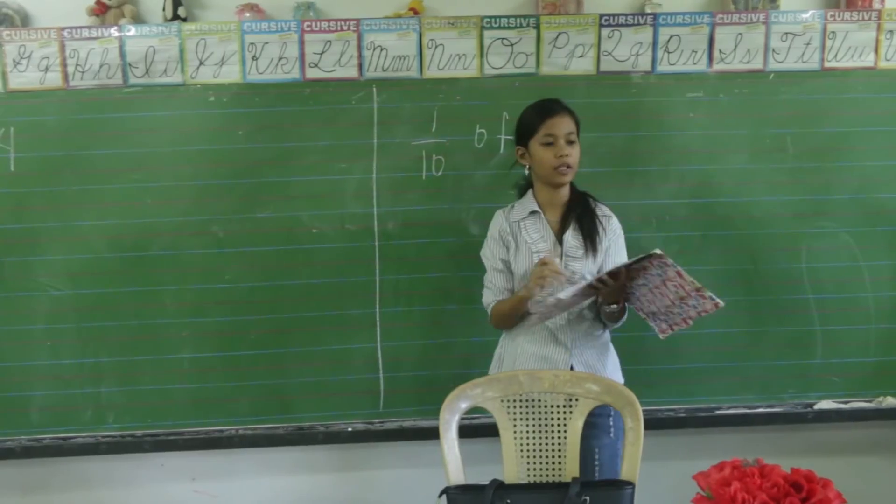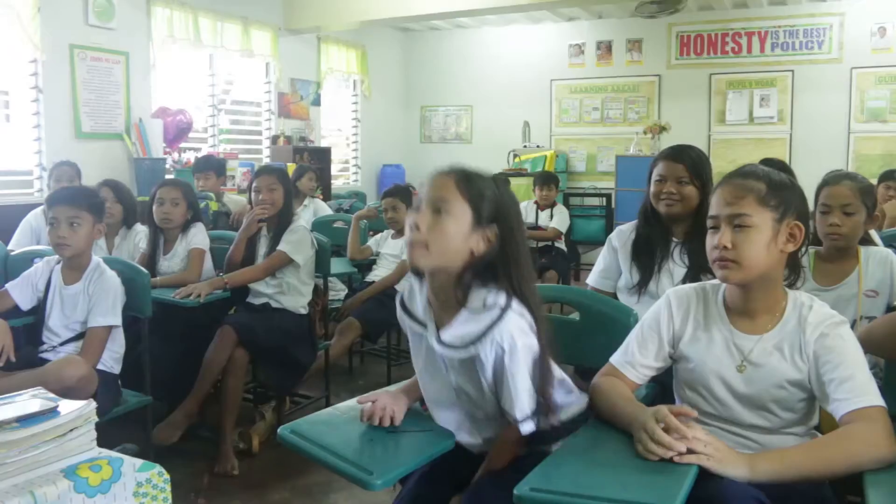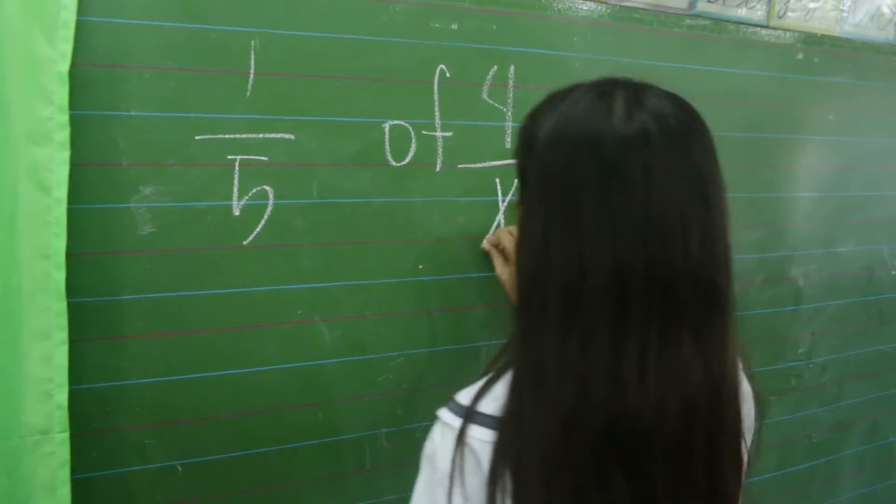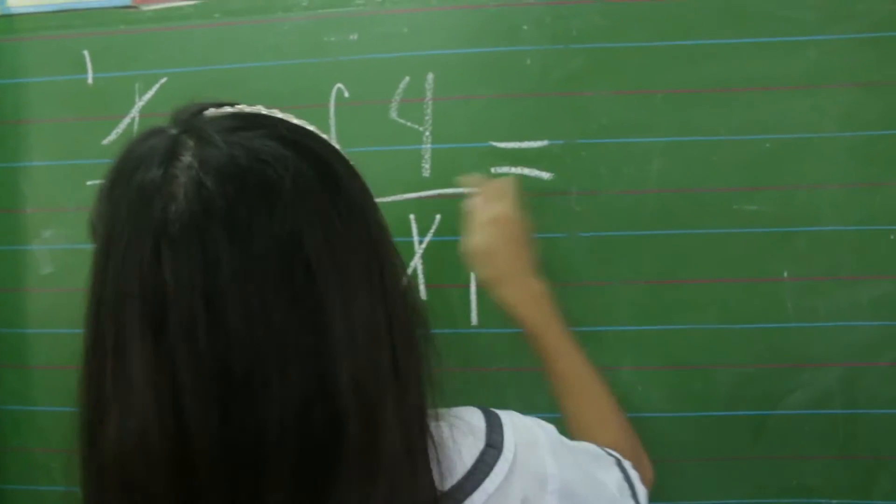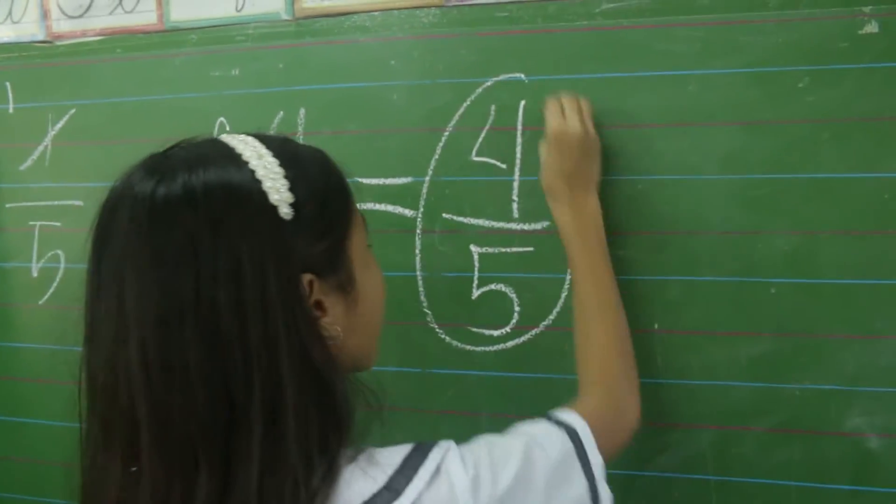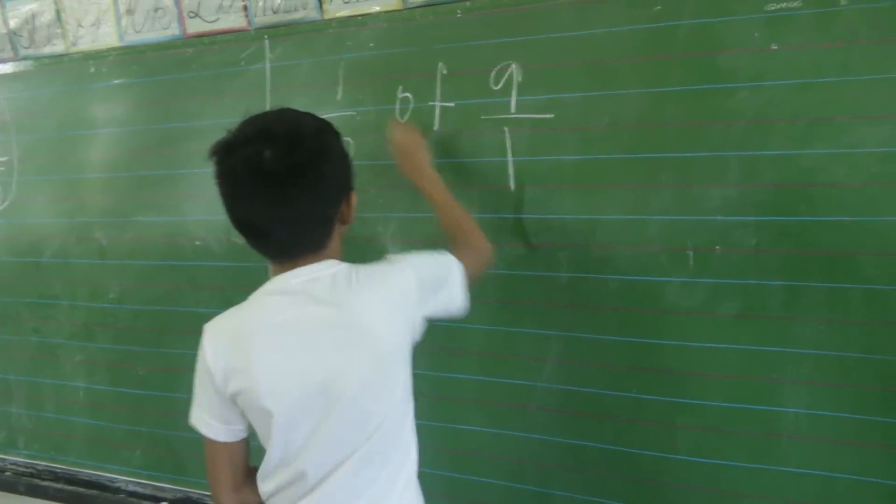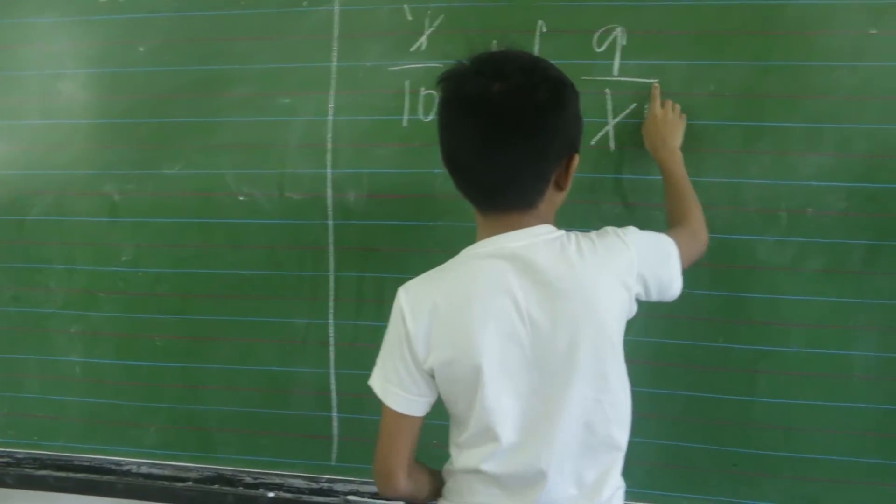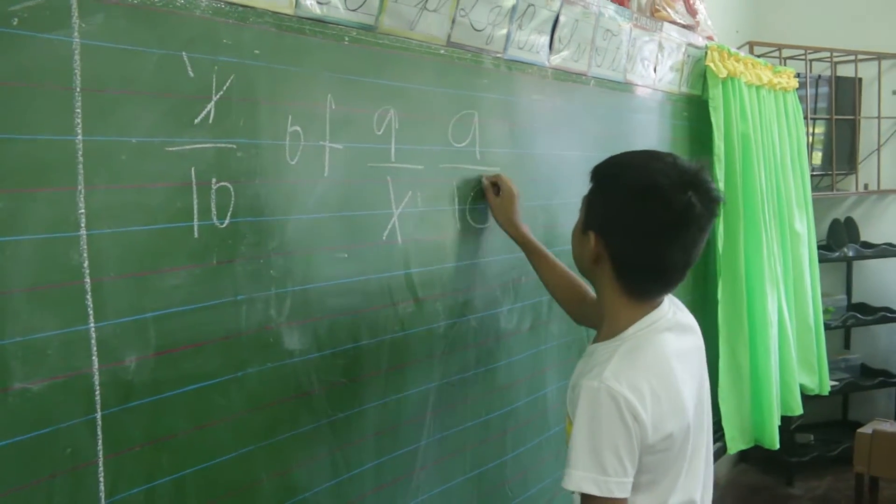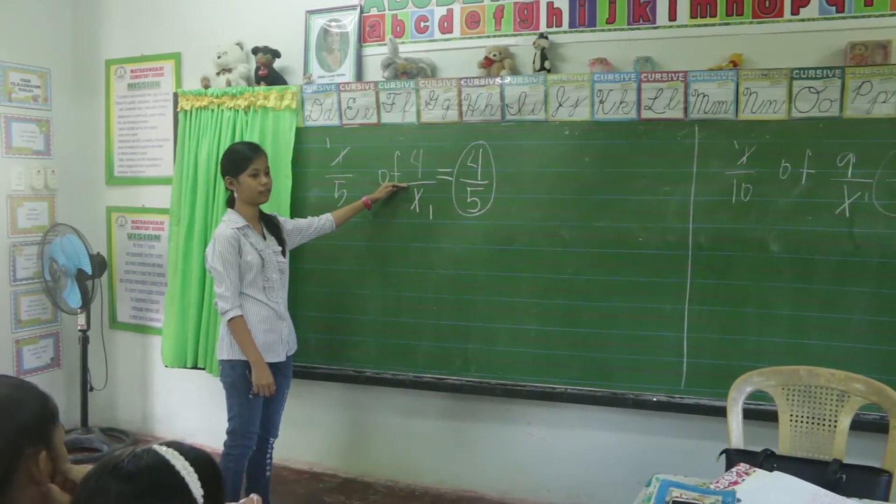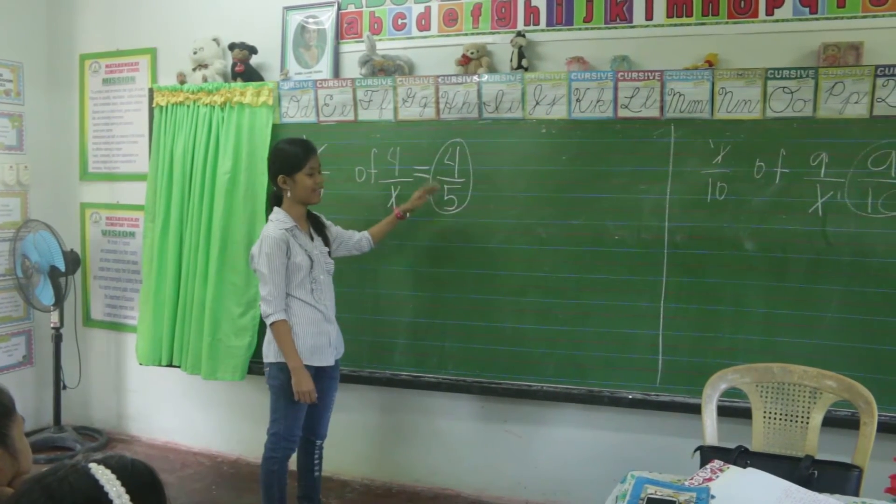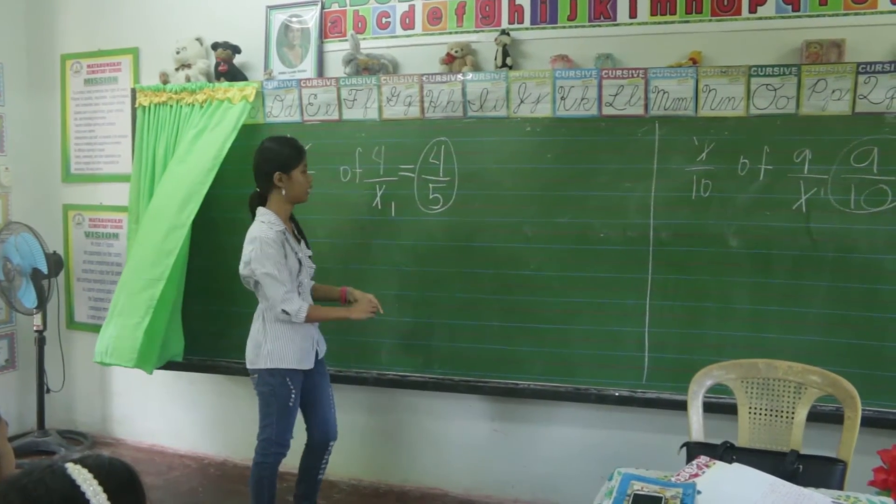Who would like to go in front and answer this? Okay, Lovely and Danielle, come here in front and answer this. 1 times 4? 4! 5 times 1? 5! The answer is 4 over 5! Correct!